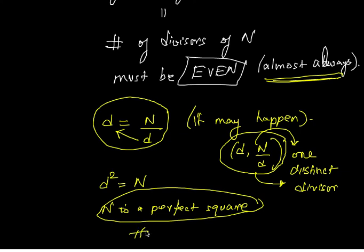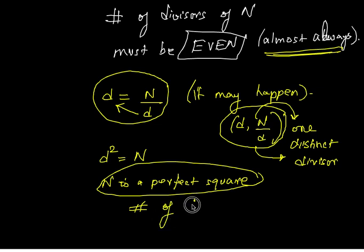So if n is a perfect square, the number of divisors is odd. This is the end of this short lecture. We will see you in the next one. Thank you for listening.